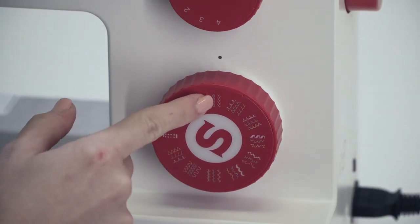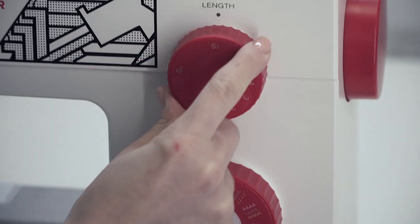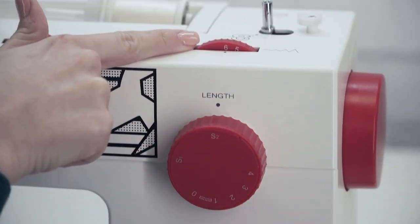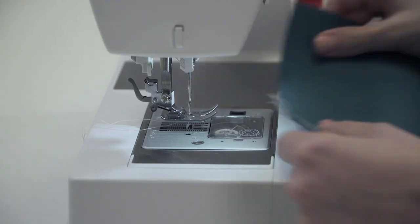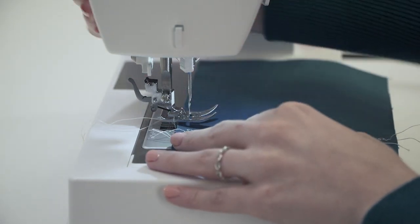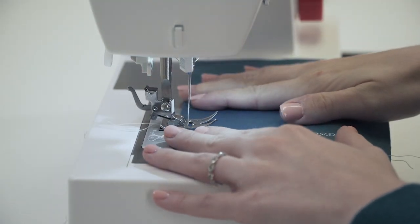To use the feather stitch, turn the length dial to the green number. I'll be leaving the width the same. Place your fabric, bring the presser foot down, and begin sewing.